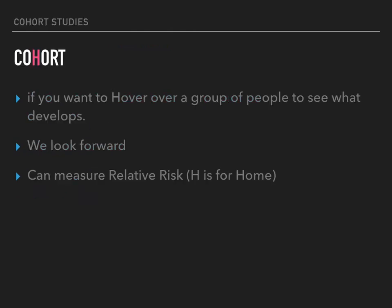As for cohort studies, I have highlighted the H. You're hovering over a group of people to see what develops. I'm talking about prospective cohort studies — we're looking forward and we can measure relative risk. The H is highlighted because it's the only study of the four that has an H, and H is for home, and that's where you'll hopefully find your relatives.